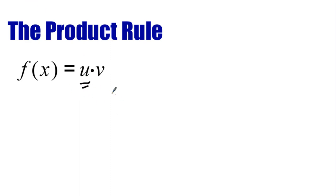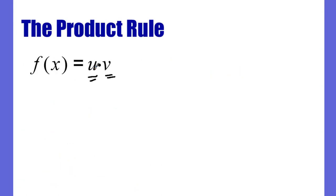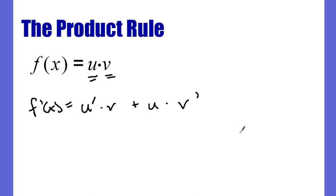If I have a function here and a function here, I'm going to call this a function u and a function v. This is the overall function f of x. Think about sine of x being our u and 3x squared being our v. The product rule says: when we do the derivative, we do u prime times v plus u times v prime. That's the product rule — we do one derivative at a time.